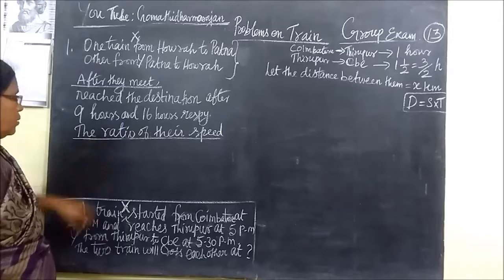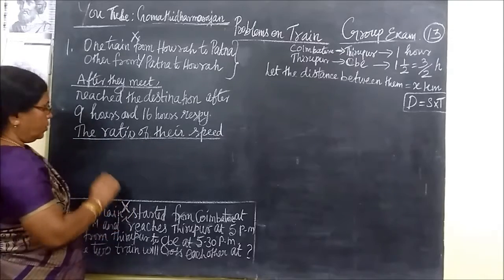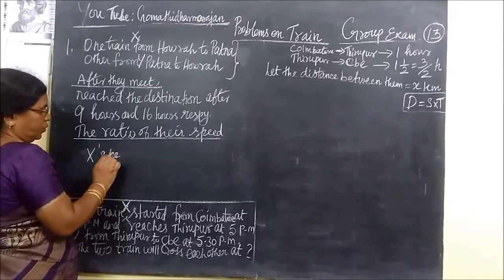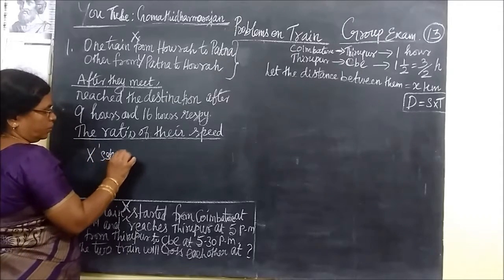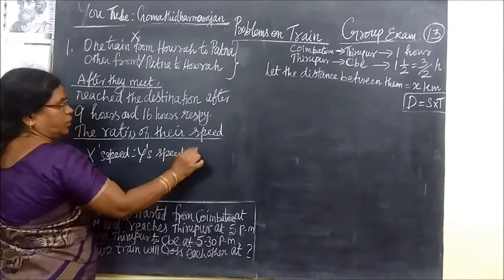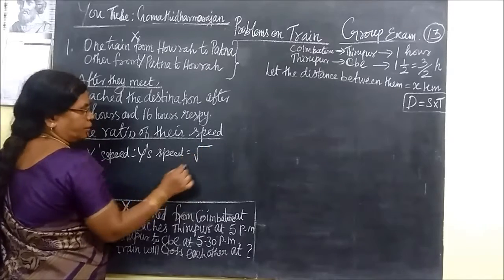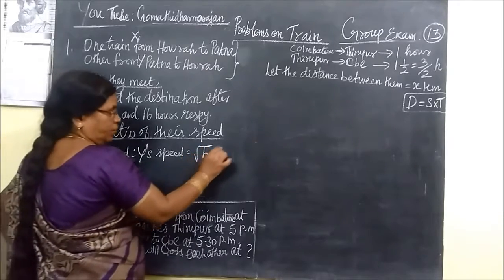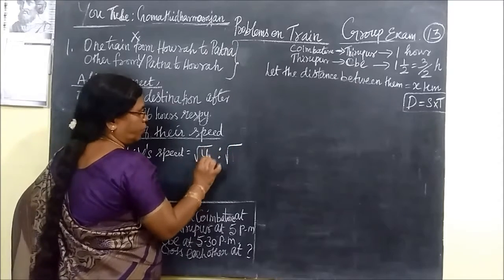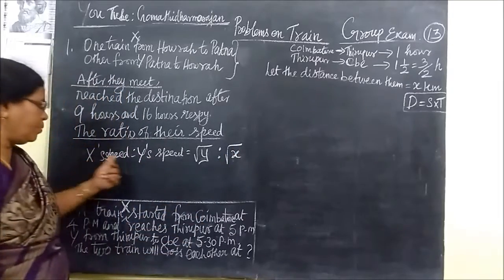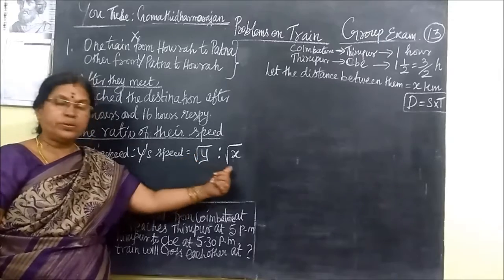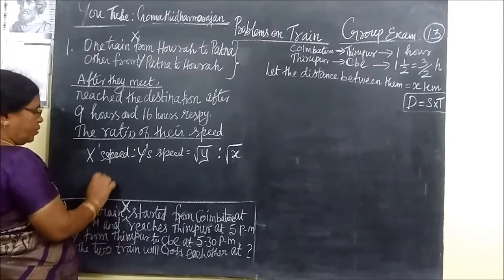So it is asked the ratio of the speed. So formula for X speed is to Y speed. Train Y is to Y speed equal to time taken by the train Y. Train Y is to the time taken by train X or here you can write Y.